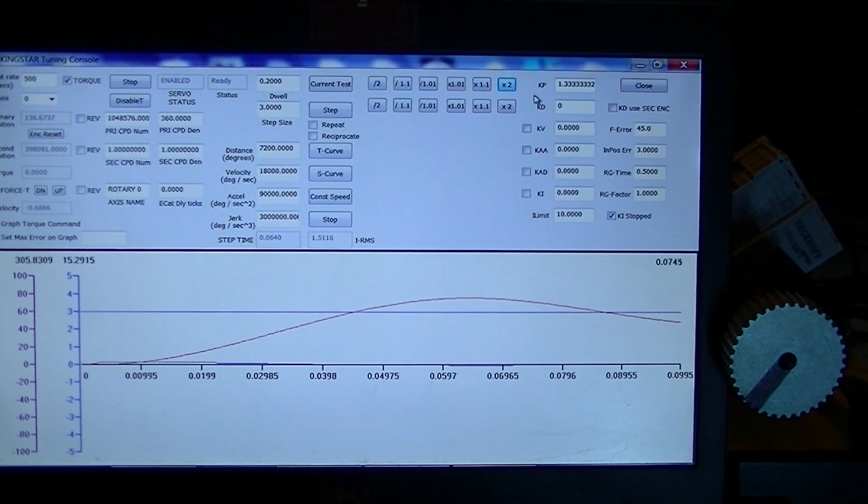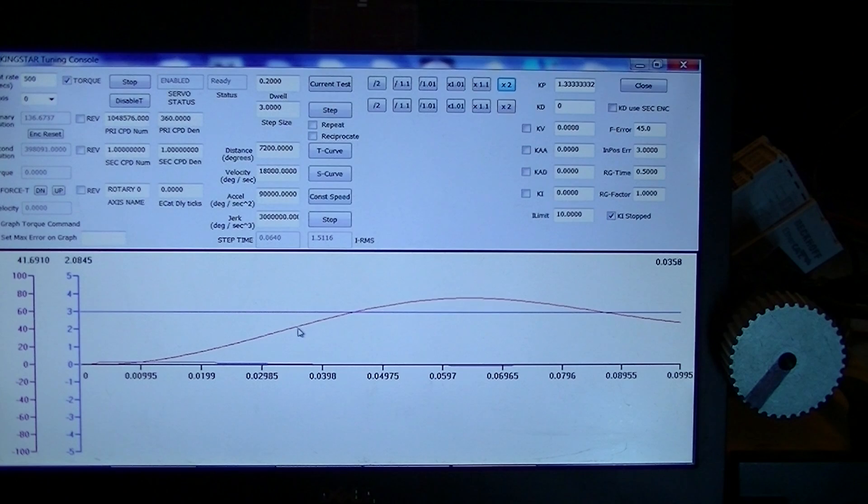KD, on the other hand, looks at the change in the error and would look, for instance, at the slope in this section of the line and say, we may not be at our target yet, but we are rapidly approaching our target, so maybe it's time to put the brakes on.